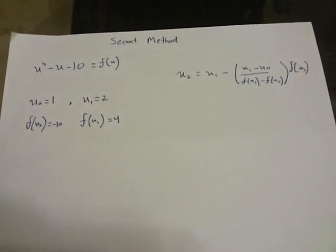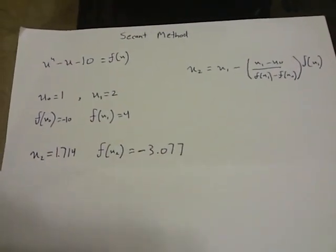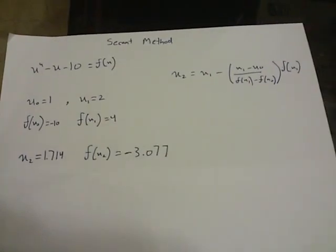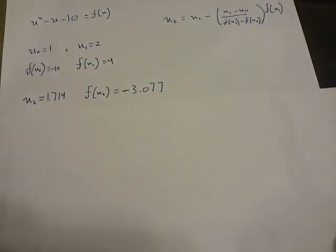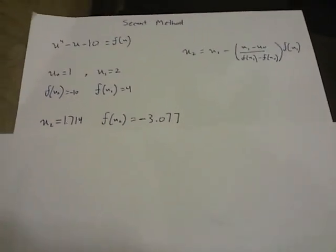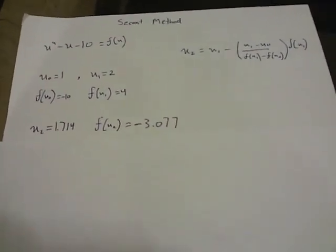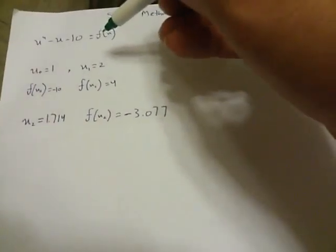So we found x2's value to be 1.714, and we found the function f of x2 by putting 1.714 in the given equation. We found it to be minus 3.077.